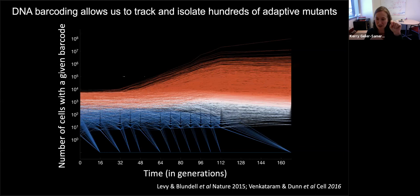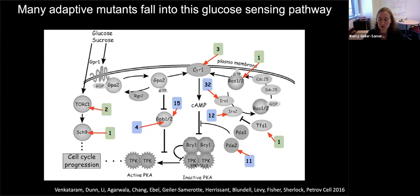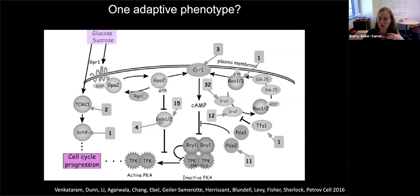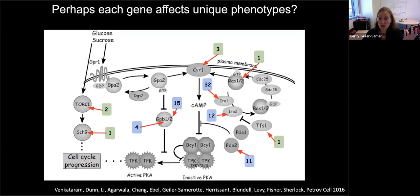There's just one problem — the phenotype layer is missing. The researchers think these mutations likely only affect a handful of phenotypes, maybe even one, because they all fall into a glucose sensing pathway and probably affect flux through that pathway. However, there are actually two glucose sensing pathways — TOR-SEH and RAS-PKA — so maybe there are actually two classes of phenotype. Or maybe there's a lot of latent phenotypic complexity and every mutant affects a whole bunch of different phenotypes. How do we count the number of phenotypes these mutants affect?